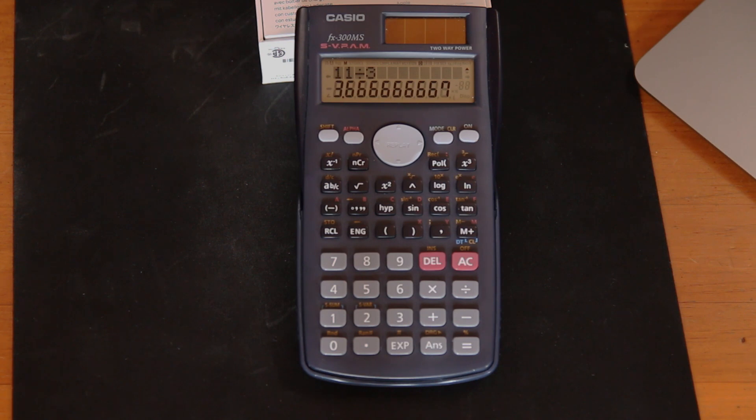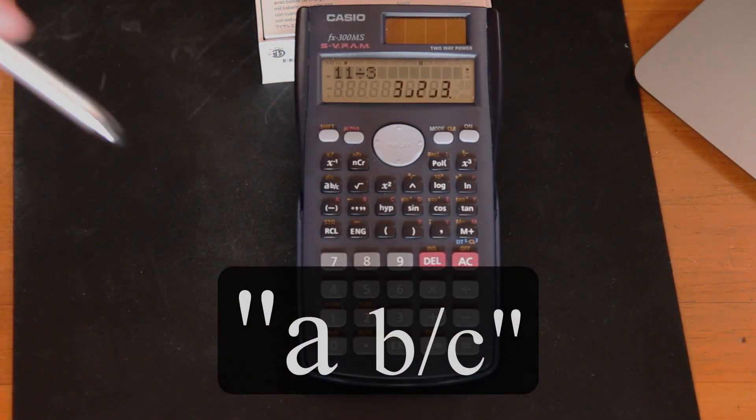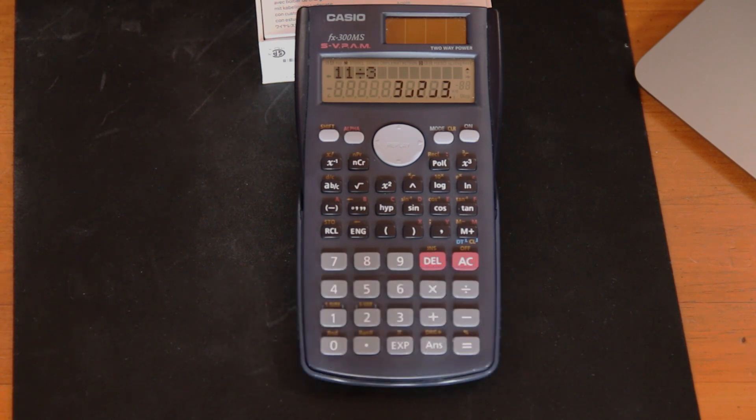If you want to convert that into a fraction, you hit the a b/c button, which gives us a mixed fraction in this case of 3 and 2 over 3.